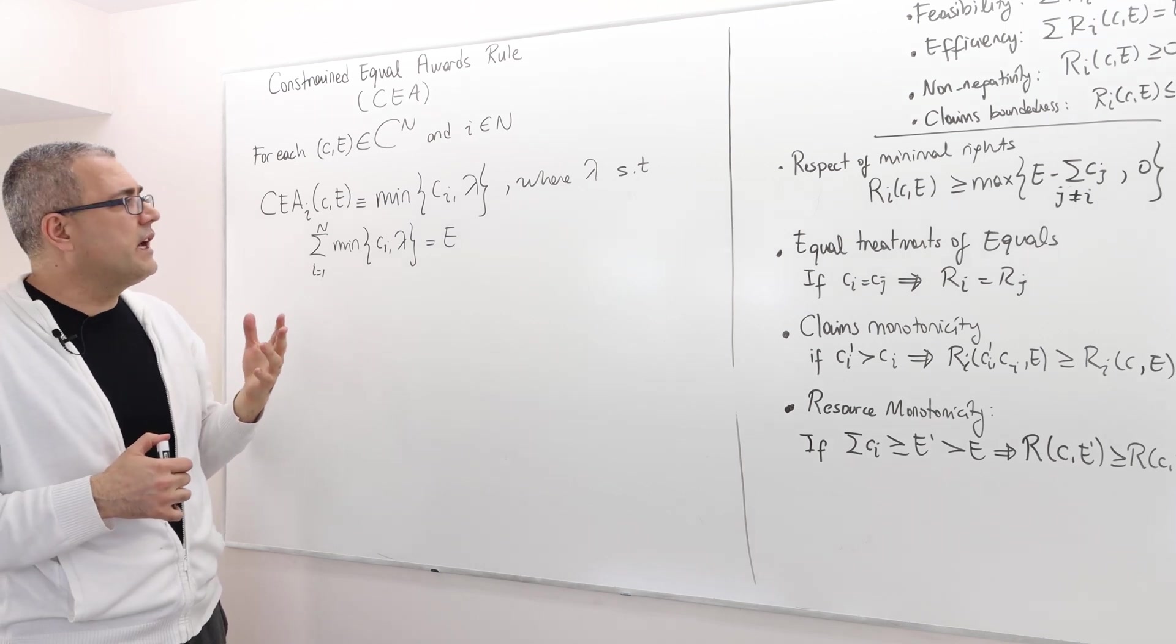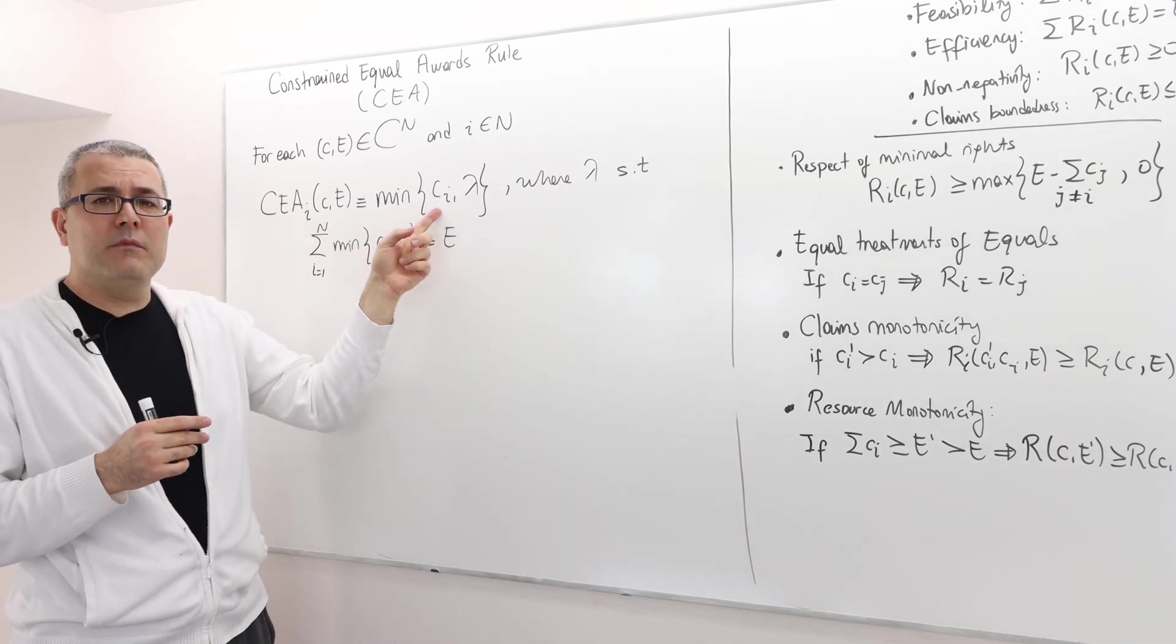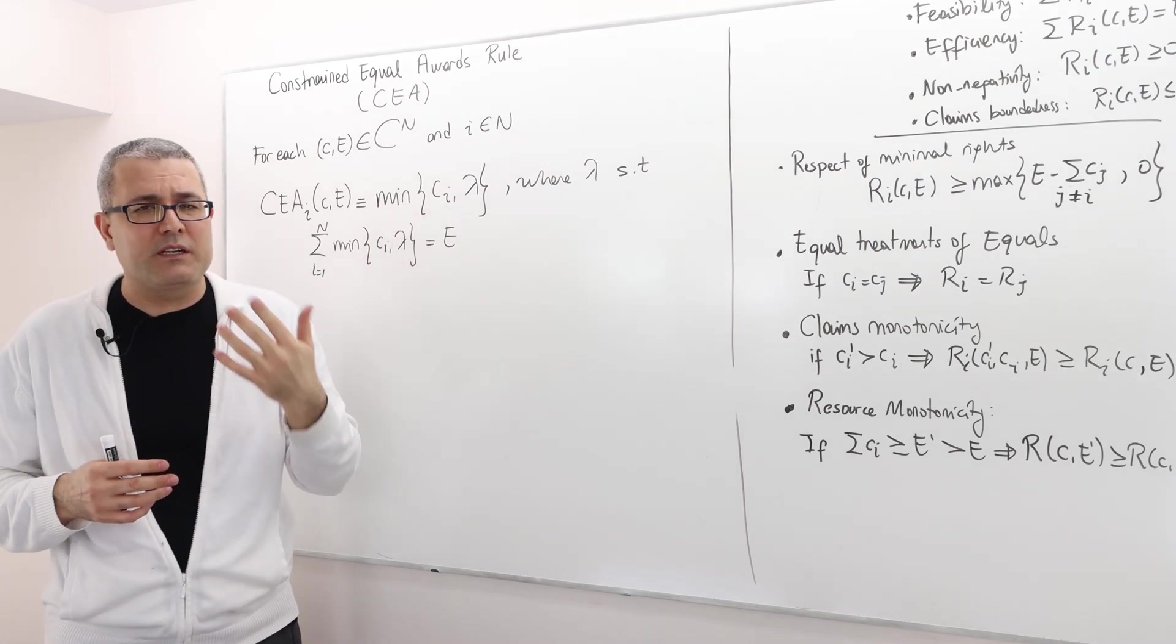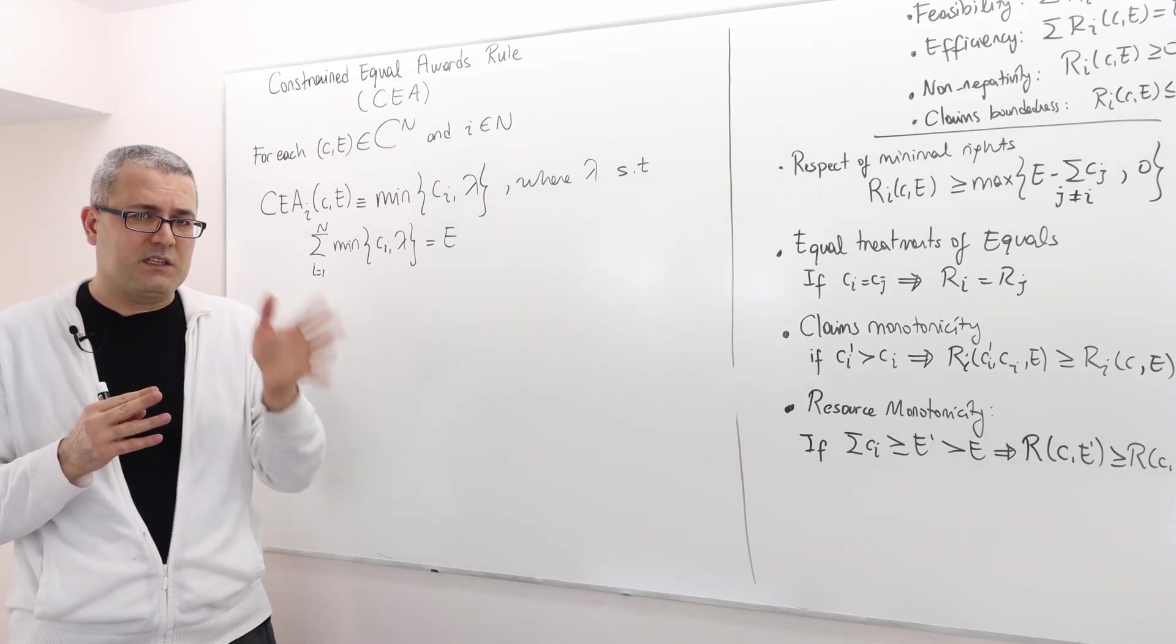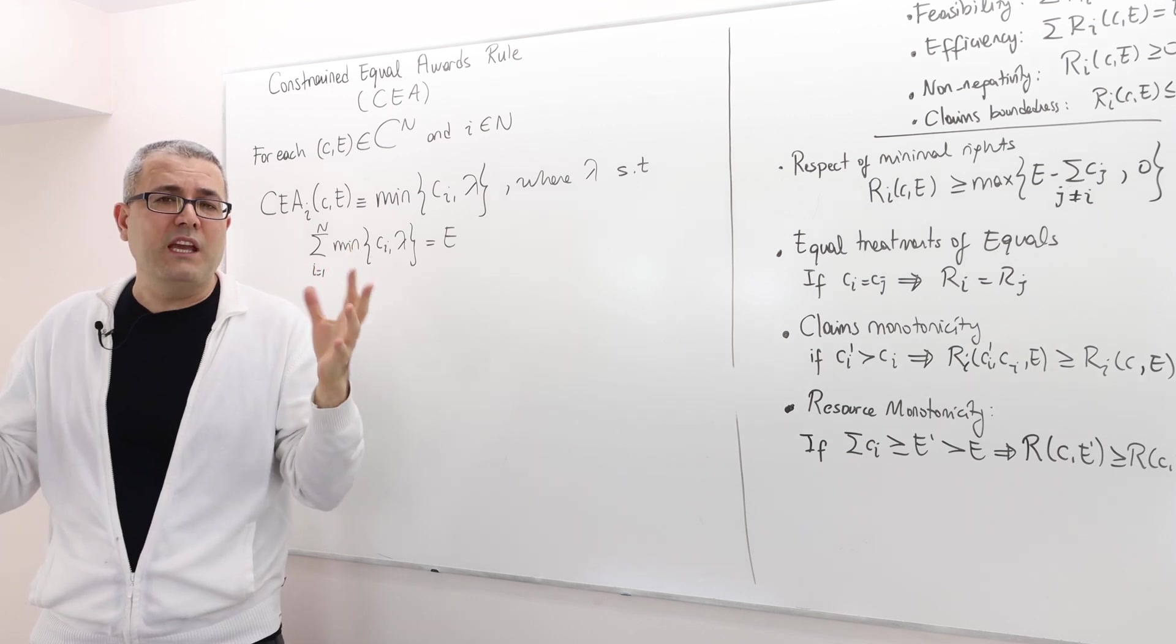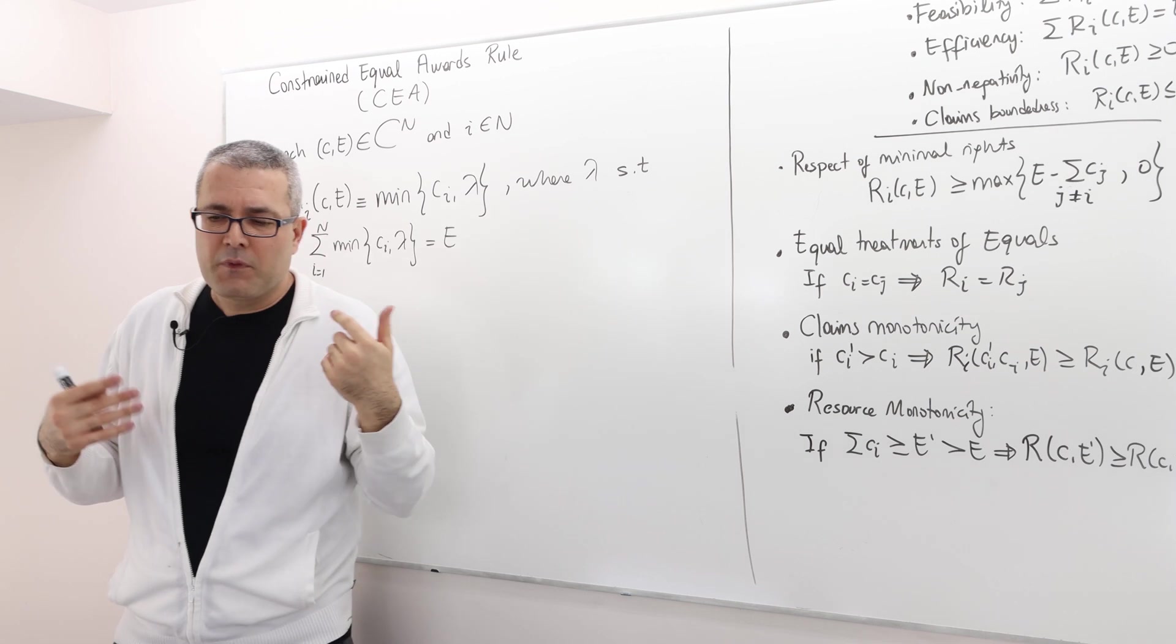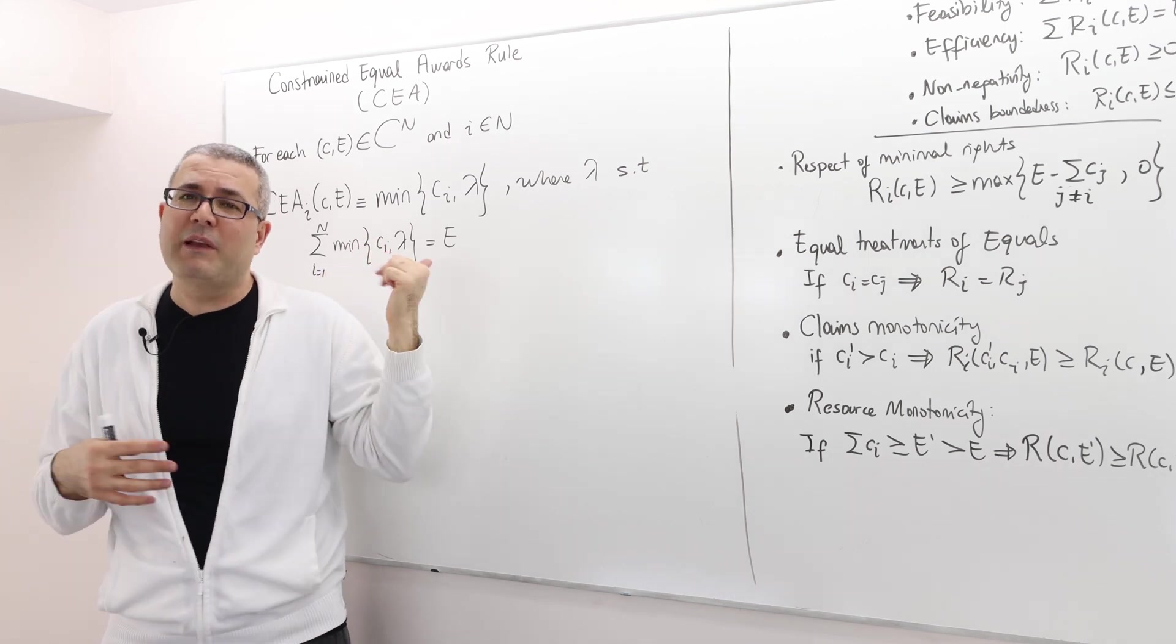What does it say intuitively? It basically says each agent i is going to be rewarded at most his claim, and at least some parameter lambda. So if a claim is very small, we're going to give this agent his claim. But if the claim of this player is very large, I'm going to pool all those agents with huge claims and give them the same equal amount. So I divide the creditors into two groups: those who have high claims and those who have low claims.